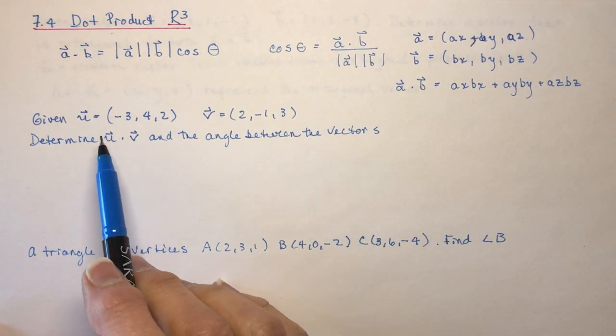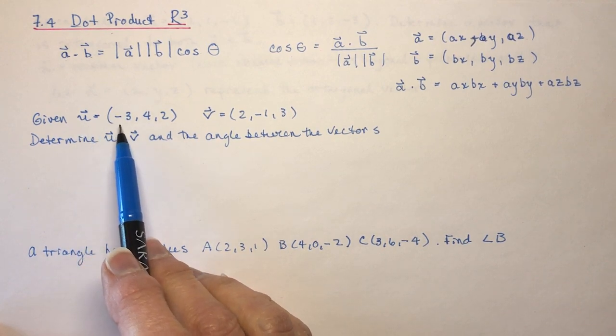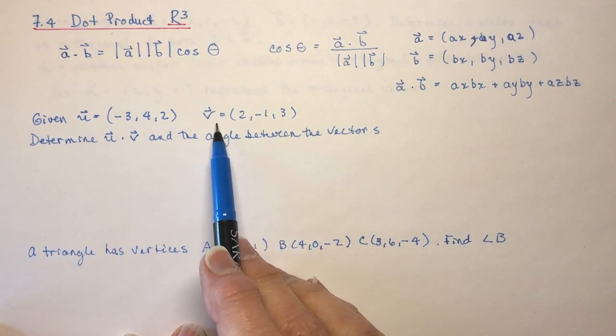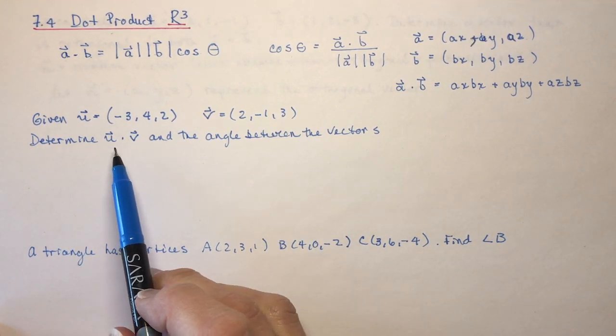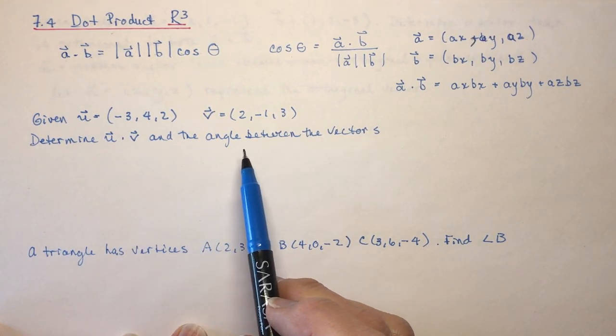So let's look at one with three here. I have given you vector u with minus 3, 4, and 2, and vector v, 2 minus 1, 3. And your job is to determine the dot product and the angle between the vectors.